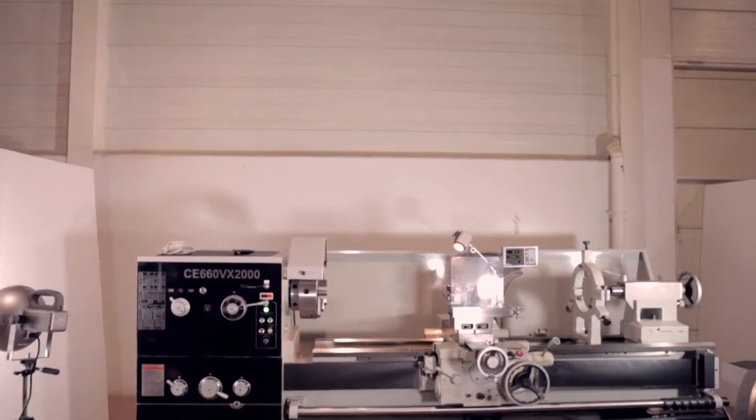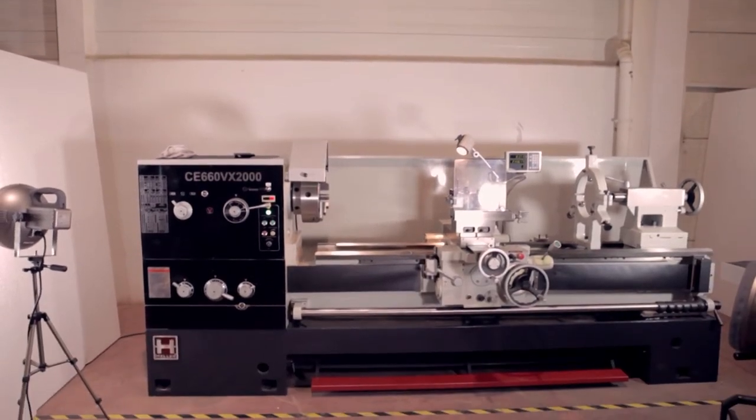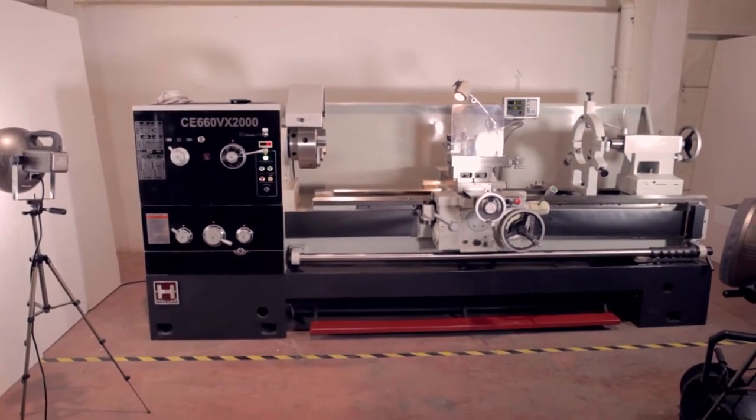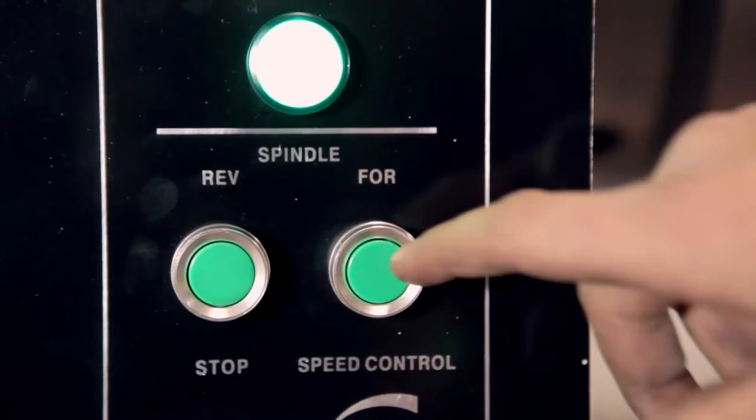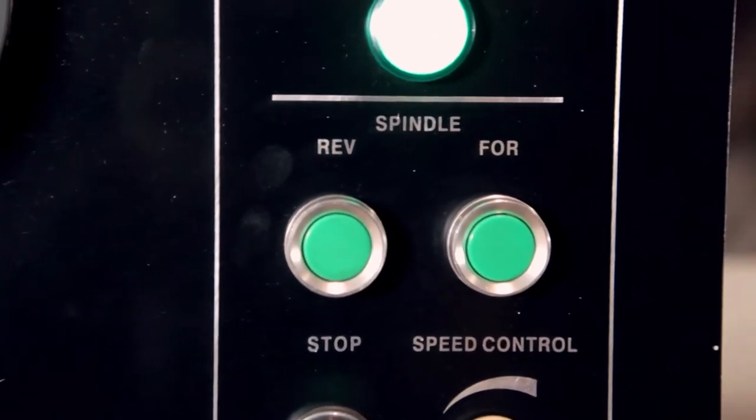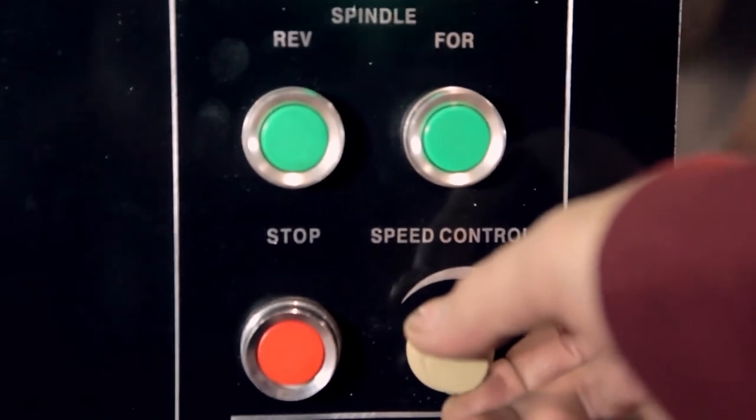Follow CE660V by 2000mm lathe. High accuracy robust lathe with 660mm swing over bed. Available in 1.5, 2, and 3 meters between centers.